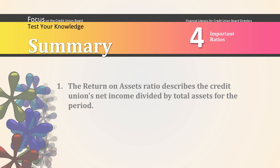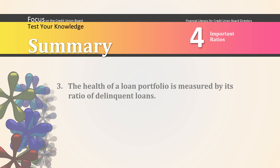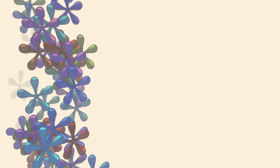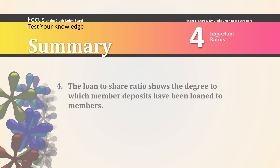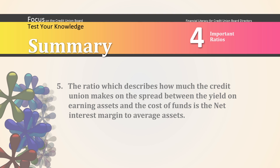The return on asset ratio describes the credit union's net income divided by total assets for the period. The standard set of ratios used by the NCUA is called a Financial Performance Report, or FPR. The health of a loan portfolio is measured by its ratio of delinquent loans. The loan-to-share ratio shows the degree to which member deposits have been loaned to members. The ratio which describes how much the credit union makes on the spread between the yield on earning assets and the cost of funds is the net interest margin to average assets.